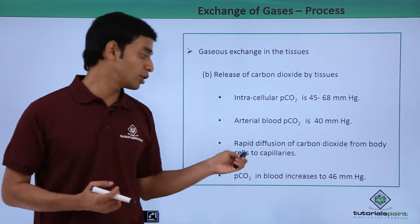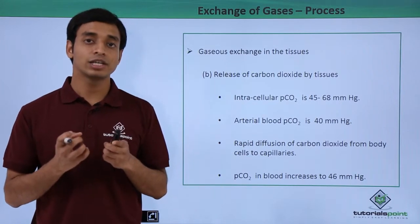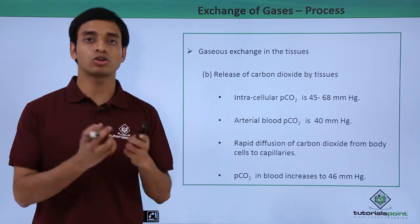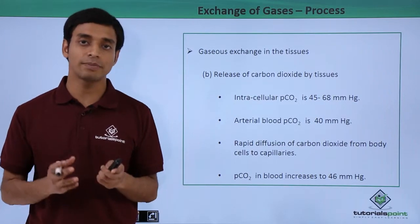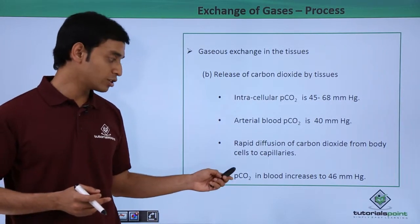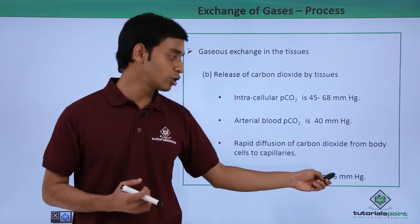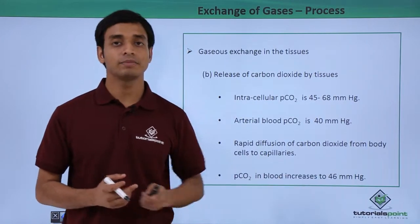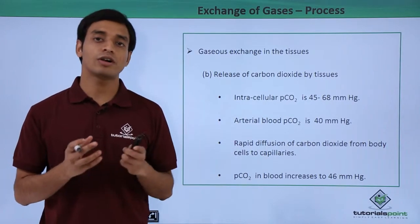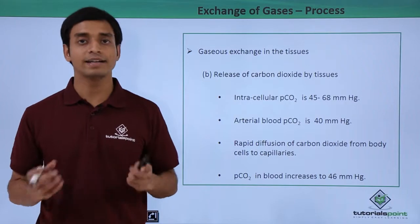Carbon dioxide has 20 to 25 times more solubility in blood compared to oxygen. As a result, the partial pressure of carbon dioxide in the blood increases to about 46 mmHg. In this way, the process of exchange of carbon dioxide and oxygen happens in both the lungs and the tissues.